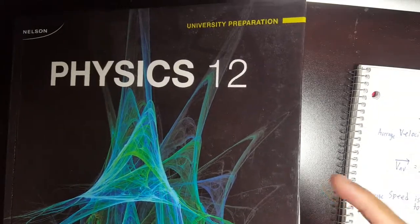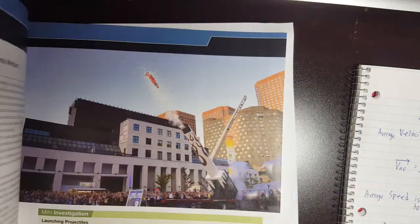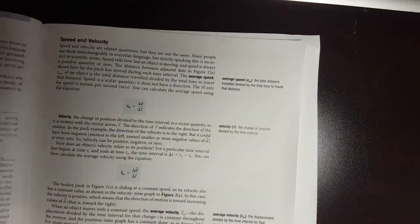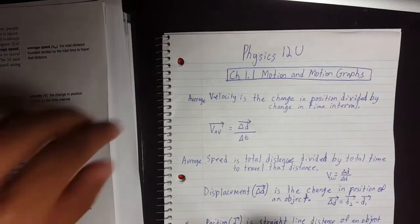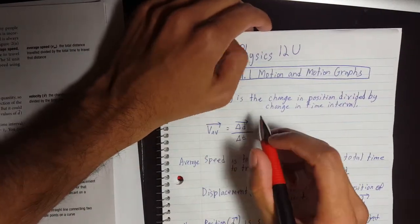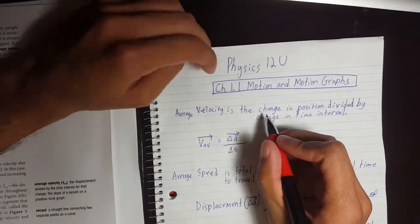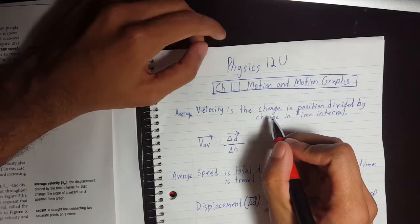So unit 1 is dynamics and the first chapter is kinematics, which you might remember from grade 11. Chapter 1.1: motion and motion graphs.